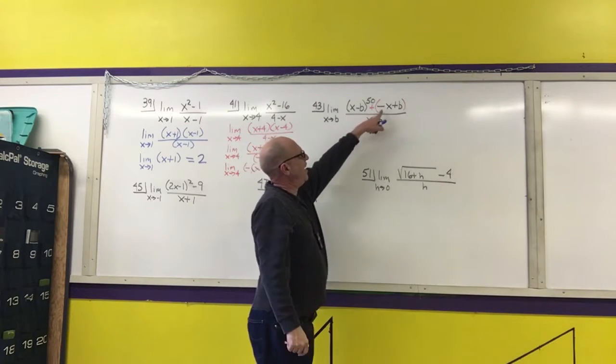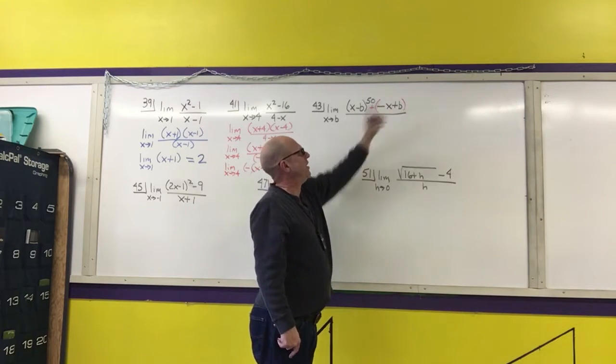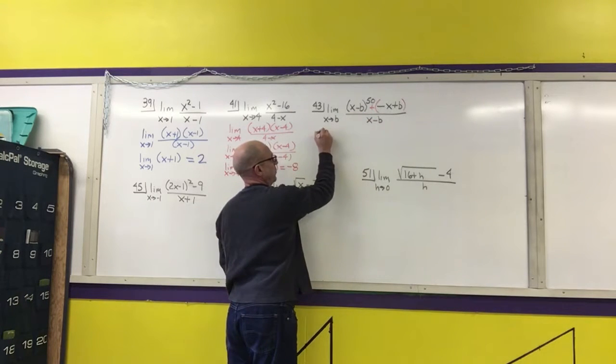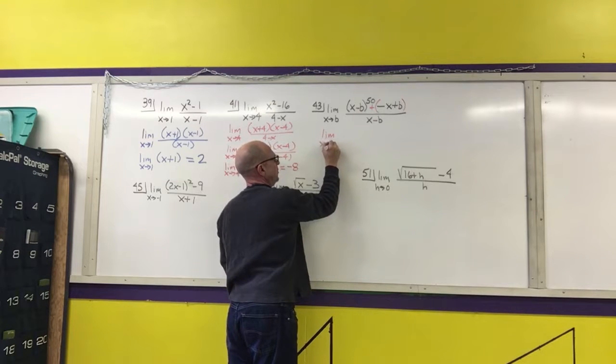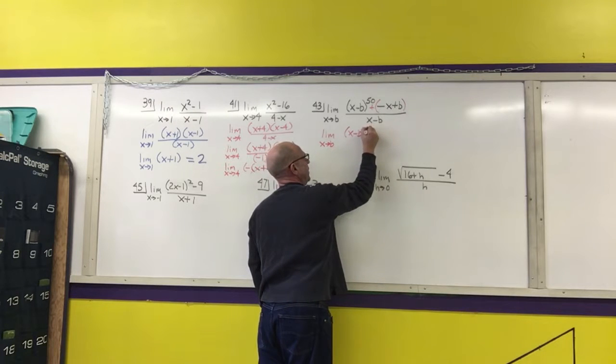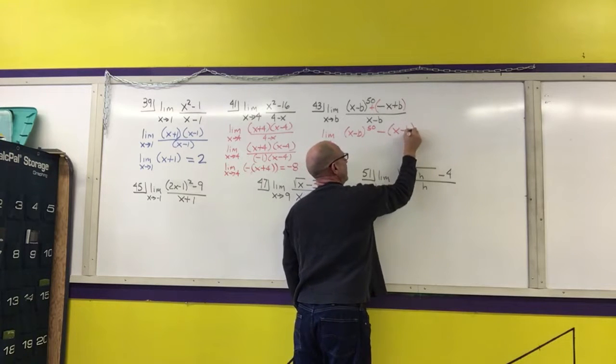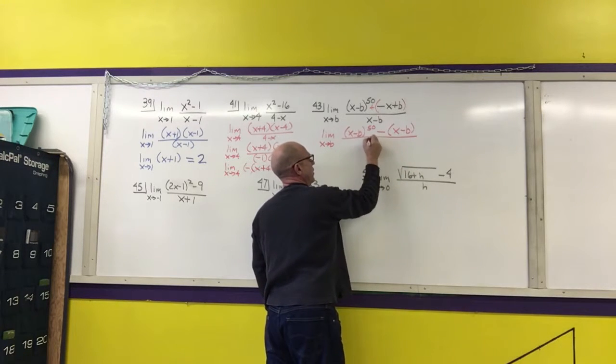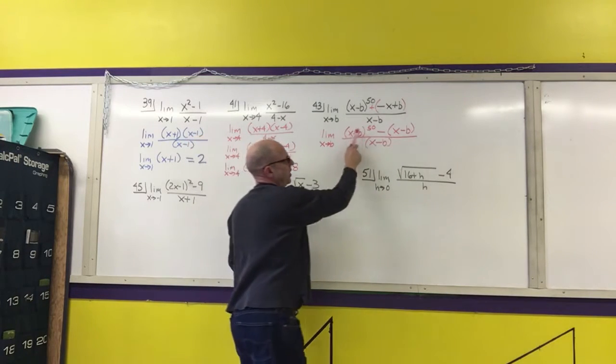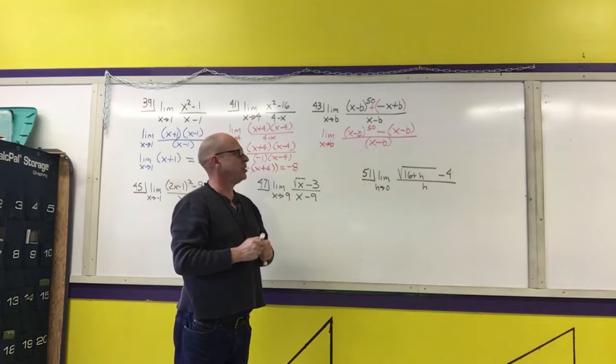So if I were to pull out a negative 1, I would basically have the same x minus b in every term, and that's what I'm going to do. So I have the limit as x approaches b of x minus b to the 50th minus x minus b all over x minus b. And now you notice that all three terms in this fraction have an x minus b, so I'm going to divide everything by x minus b.